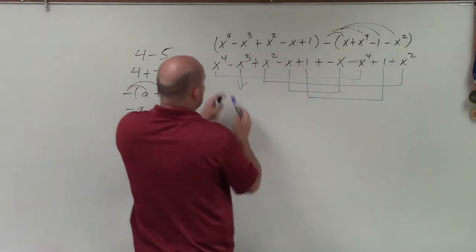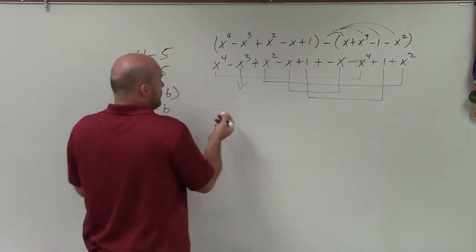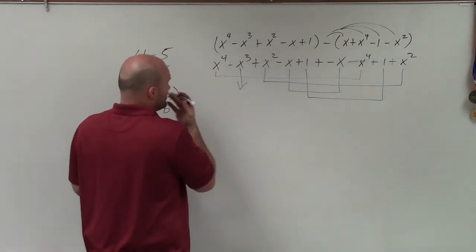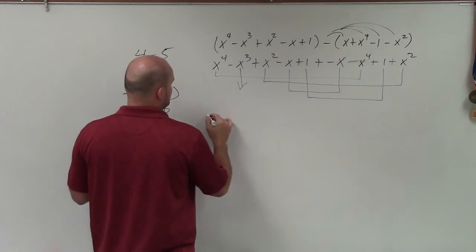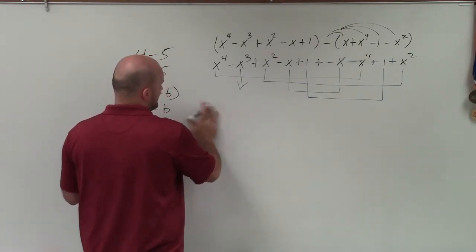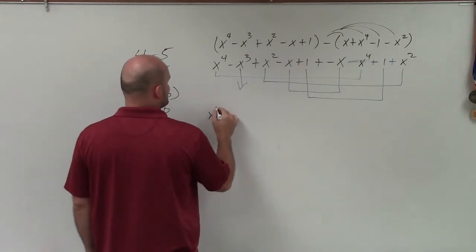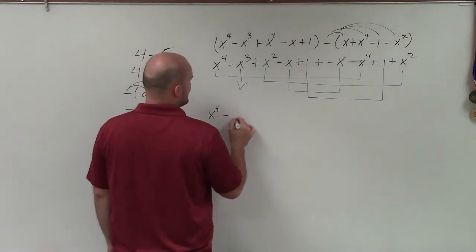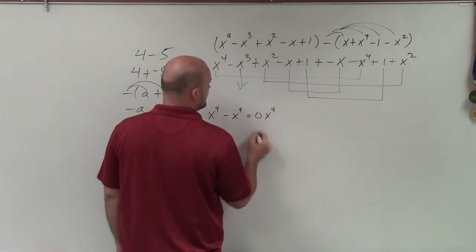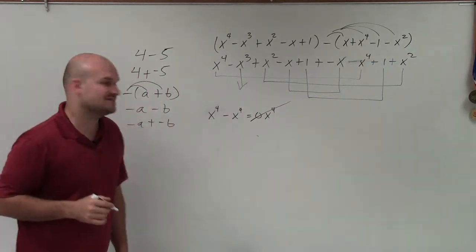Let's start with x to the 4th. Well, x to the 4th minus x to the 4th—well, that becomes 0x to the 4th. So therefore, now let's write it up. So x to the 4th minus x to the 4th, which is equal to 0x to the 4th, which just goes to 0.